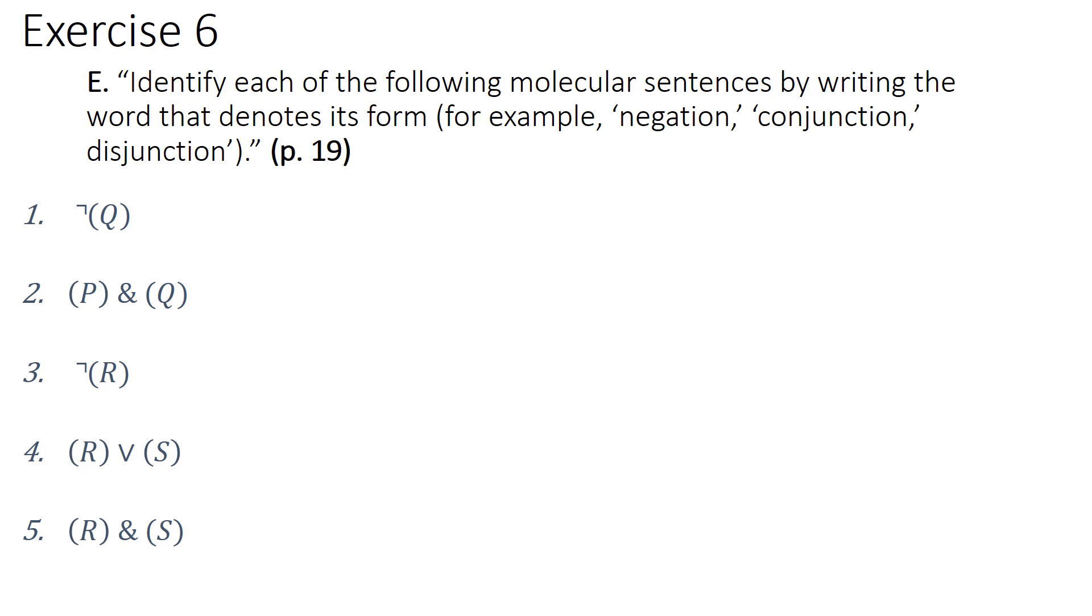So here is exercise 6 on page 19 of the textbook. Part E of exercise 6, we're to identify each of the following molecular sentences by writing the word that denotes its form. For example, negation, conjunction, disjunction.